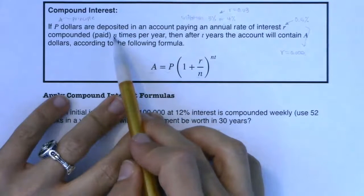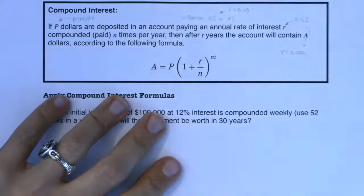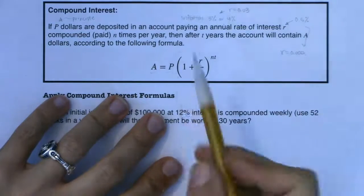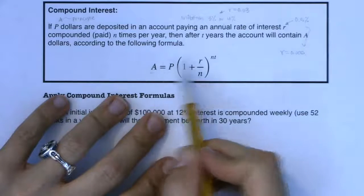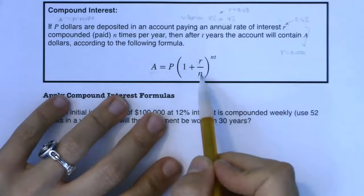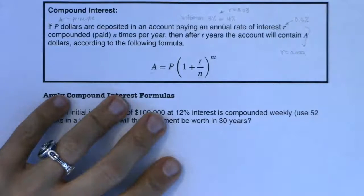All right. If you've got interest getting paid out N times per year and you keep your money in there for T years, you will eventually have A dollars. All right. So this is your starting amount. This is your finishing amount. This is your interest rate. This is the number of times you get interest. And this is the number of years you have that account open.